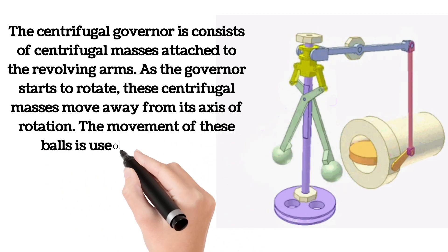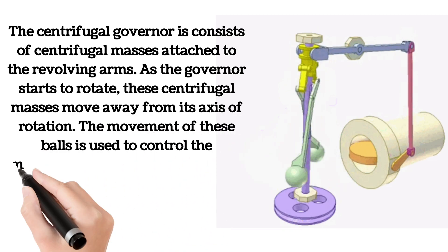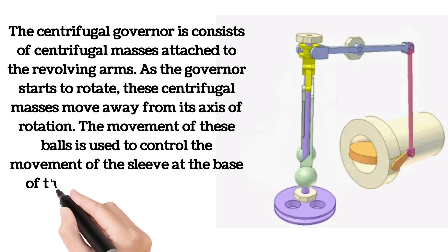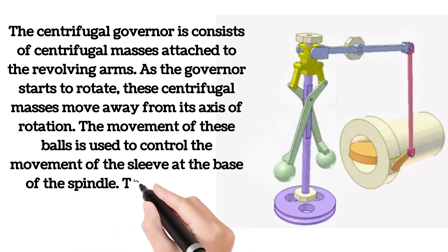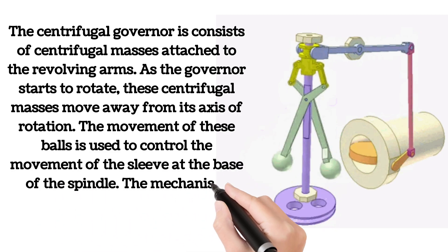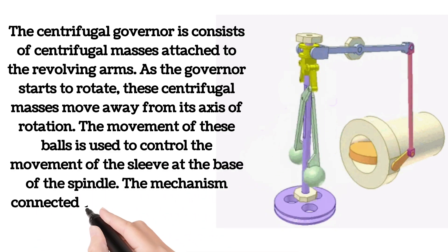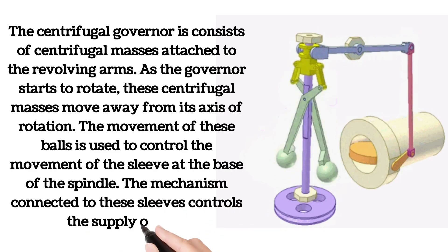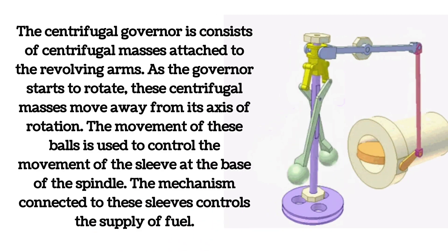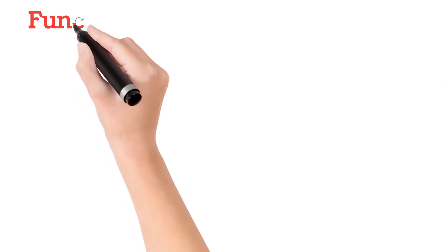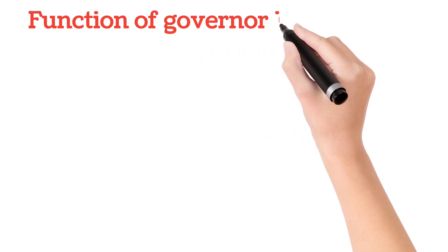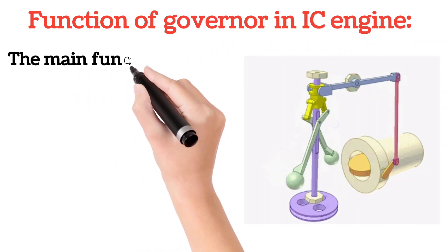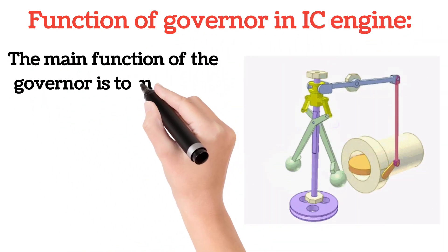The movement of these balls is used to control the movement of the sleeve at the base of the spindle. The mechanism connected to these sleeves controls the supply of fuel.